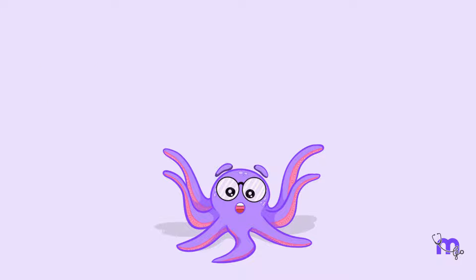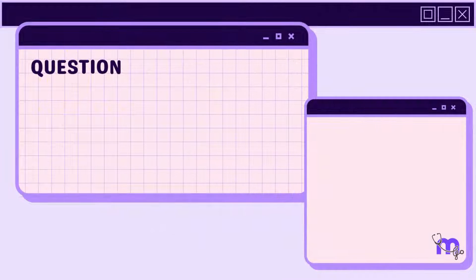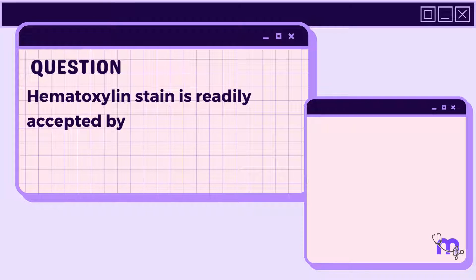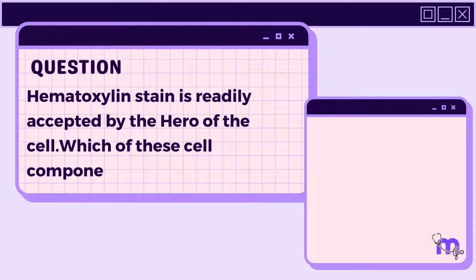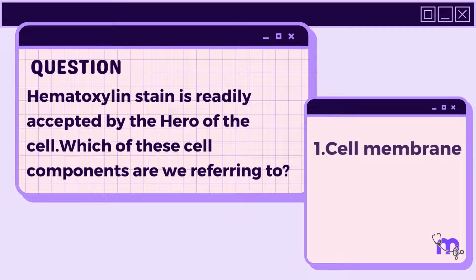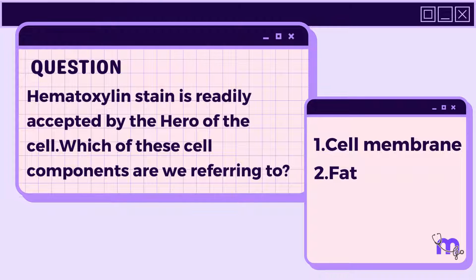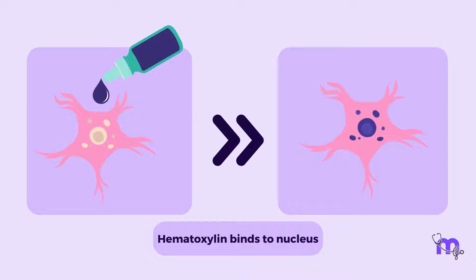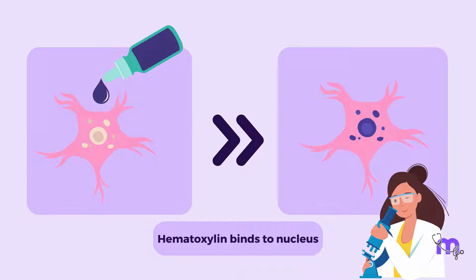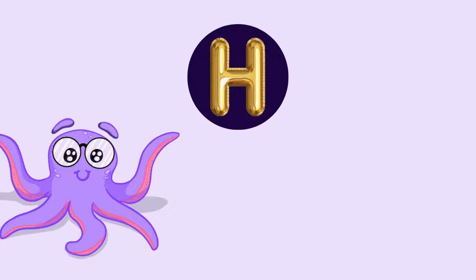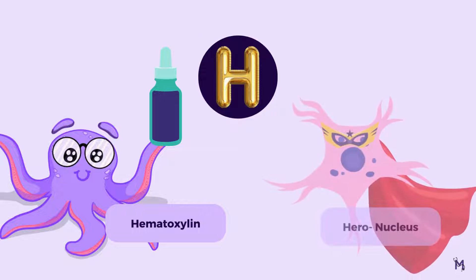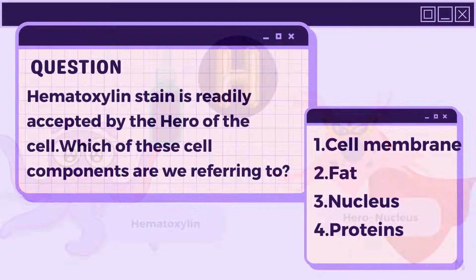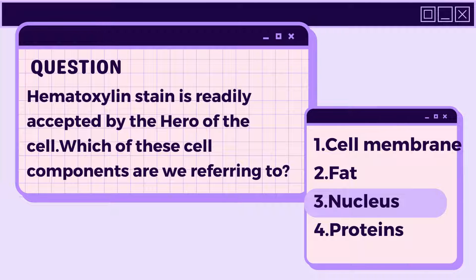Stop for a moment to answer this question: Haematoxylin stain is readily accepted by the hero of the cell. Which of these cell components are we referring to? 1. Cell membrane, 2. Fat, 3. Nucleus, 4. Proteins. Haematoxylin stain readily binds to the nuclear components, making it easier to visualise and study. As a helpful mnemonic, we can remember that H is for both haematoxylin and the hero of the cell — the nucleus. So if you correctly identified the nucleus as the component being referred to, congratulations — you got it right!